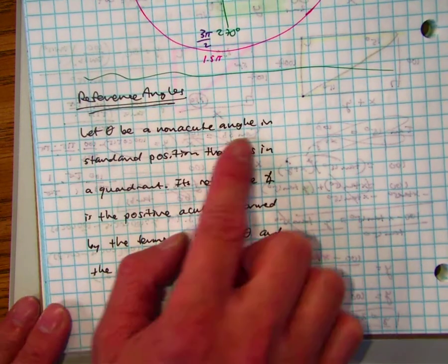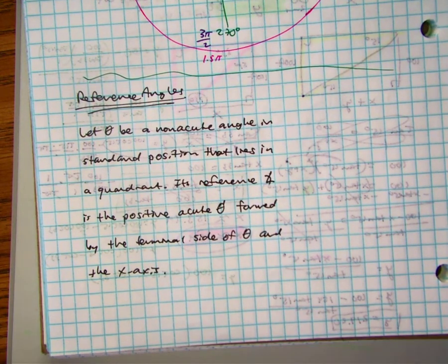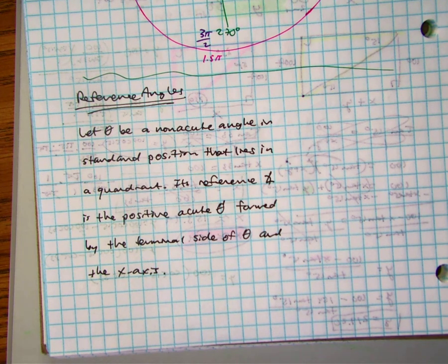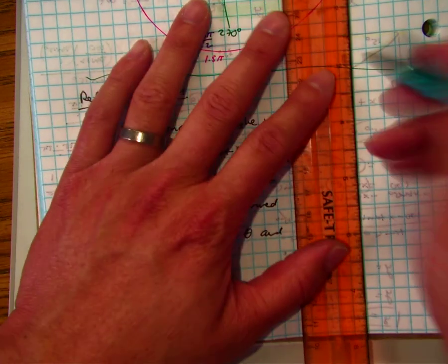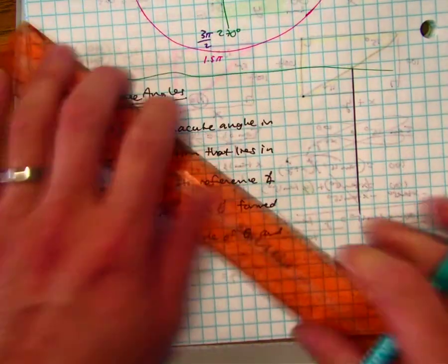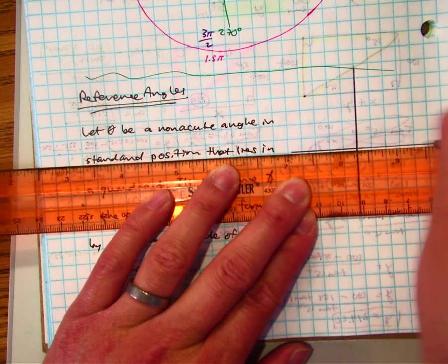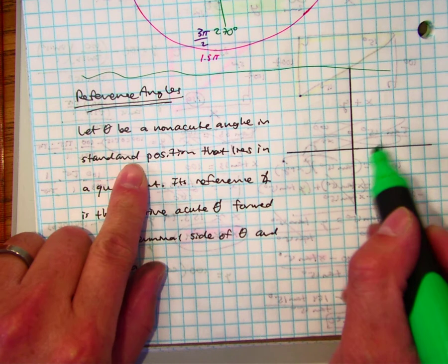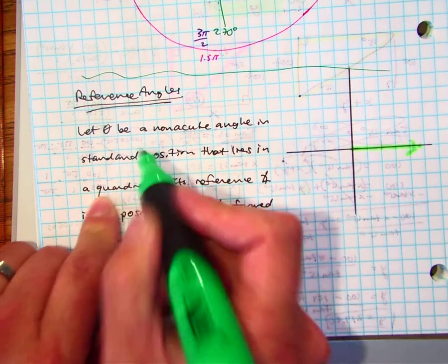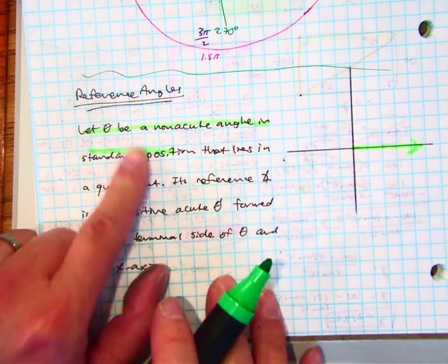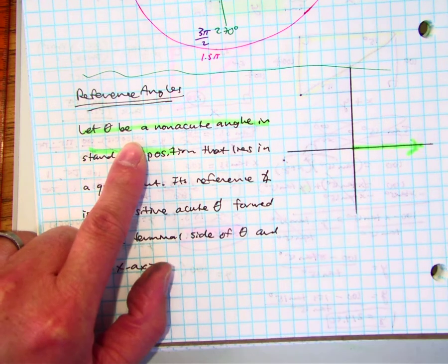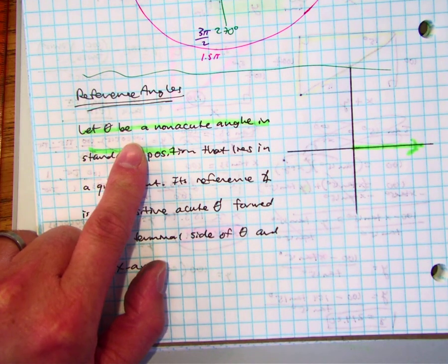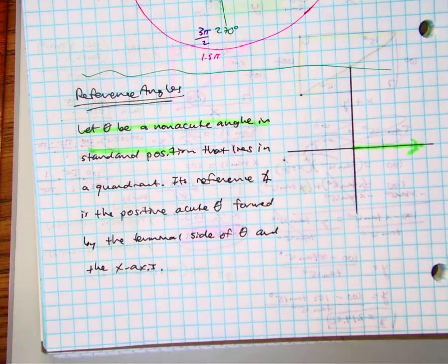Reference angles. Let theta be a non-acute angle. Let's go ahead and draw a non-acute angle in standard position. Non-acute means not acute, not 90—that means more than 90 degrees. So a non-acute angle.